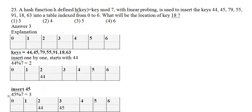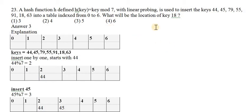Next one is a hash function. Hash function is a technique used in data structure to store data properly so that we can easily retrieve it without difficulty. They are using the function h(key) = key mod 7. The 7 represents the number of data slots in the array — 7 data items. This will be used in the linear probing concept. The key data given is: 44, 45, 79, 55, 91, 18, 63, and we want to place them in a hash table with indexing 0 to 6, totaling 7 elements.